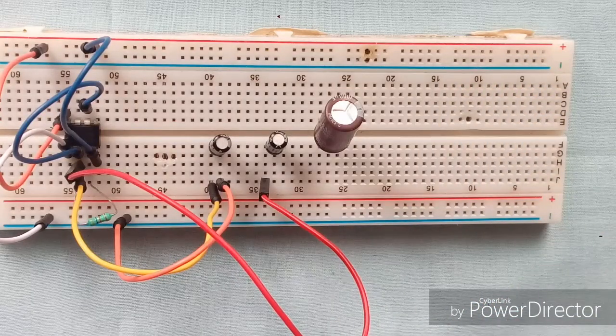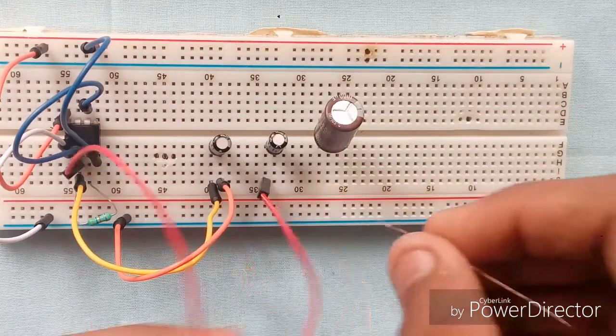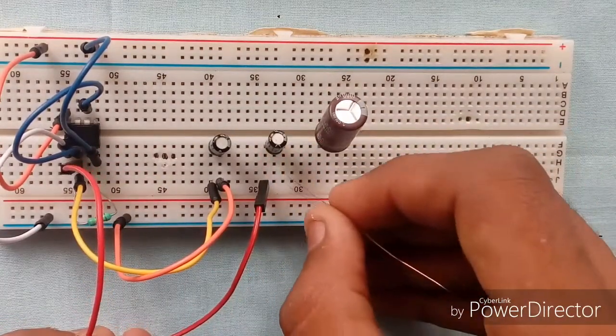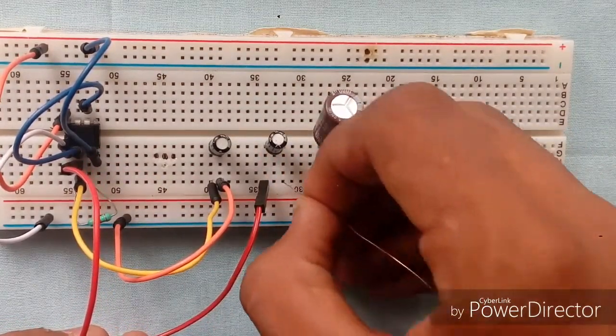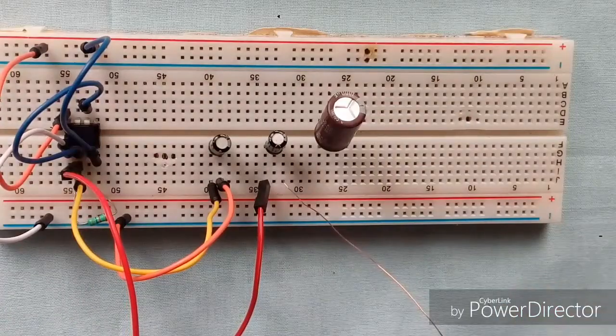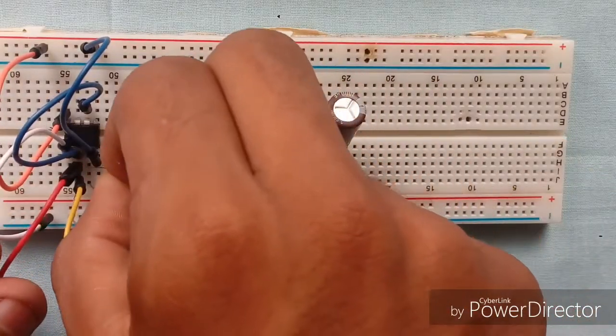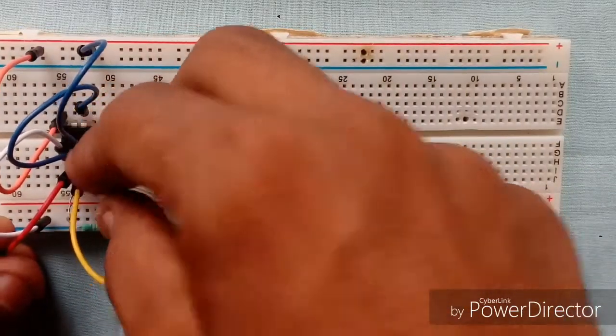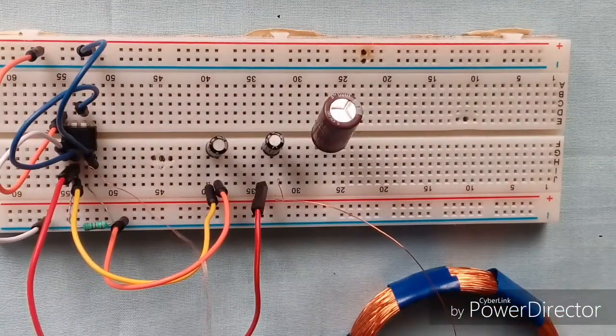Now connect one end of the wire from the coil to the positive side or negative side of the 4.7 µF capacitor, and the other end to the third pin of the IC.